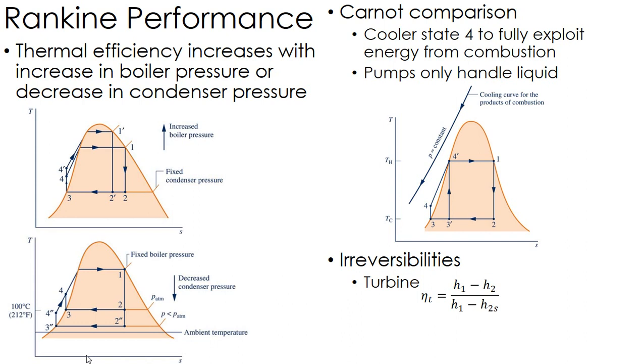Ideal would be constant entropy, so that's the h2s. I could find the best case enthalpy. Use that, and then knowing that I have a 90% efficient turbine, I can find the actual enthalpy at state two.